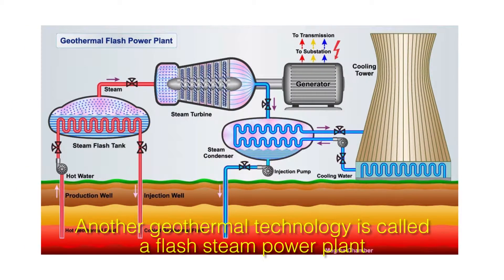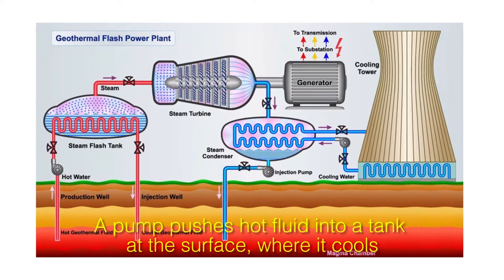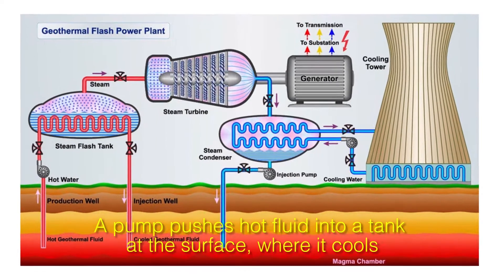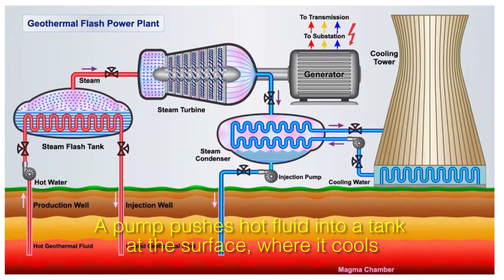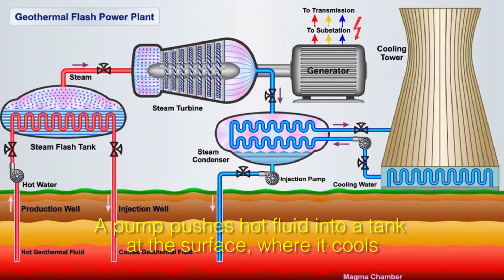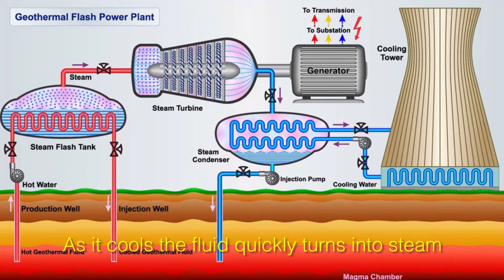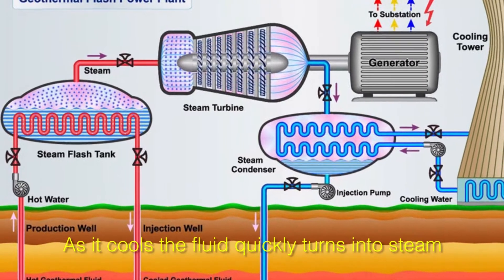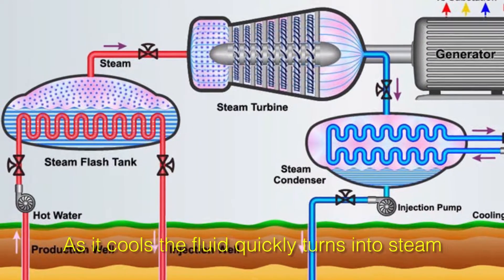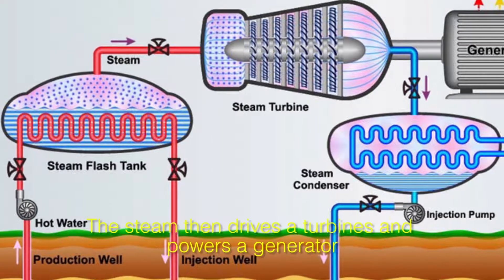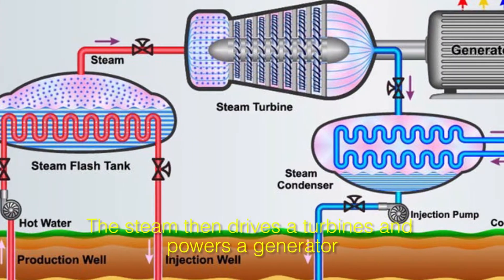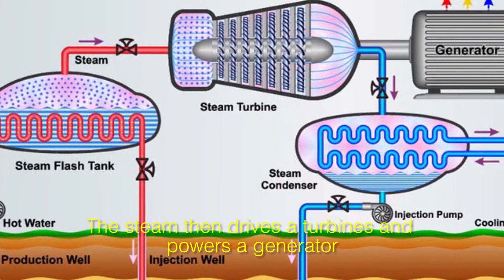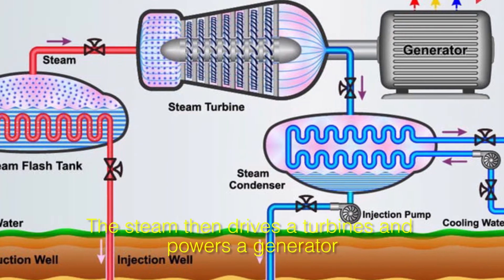Another geothermal technology is called a flash steam power plant. A pump pushes hot fluid into a tank at the surface, where it cools. As it cools, the fluid quickly turns into steam. The steam then drives a turbine and powers a generator.